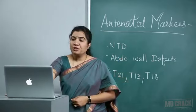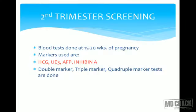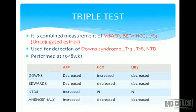For second trimester screening, either a triple marker or quadruple marker test is performed. Blood test is done at 15 to 20 weeks. The double marker test uses beta-hCG and PAPP-A. The triple marker uses MSAFP, beta-hCG, and unconjugated estriol (uE3). The quadruple marker adds inhibin A to those three markers.